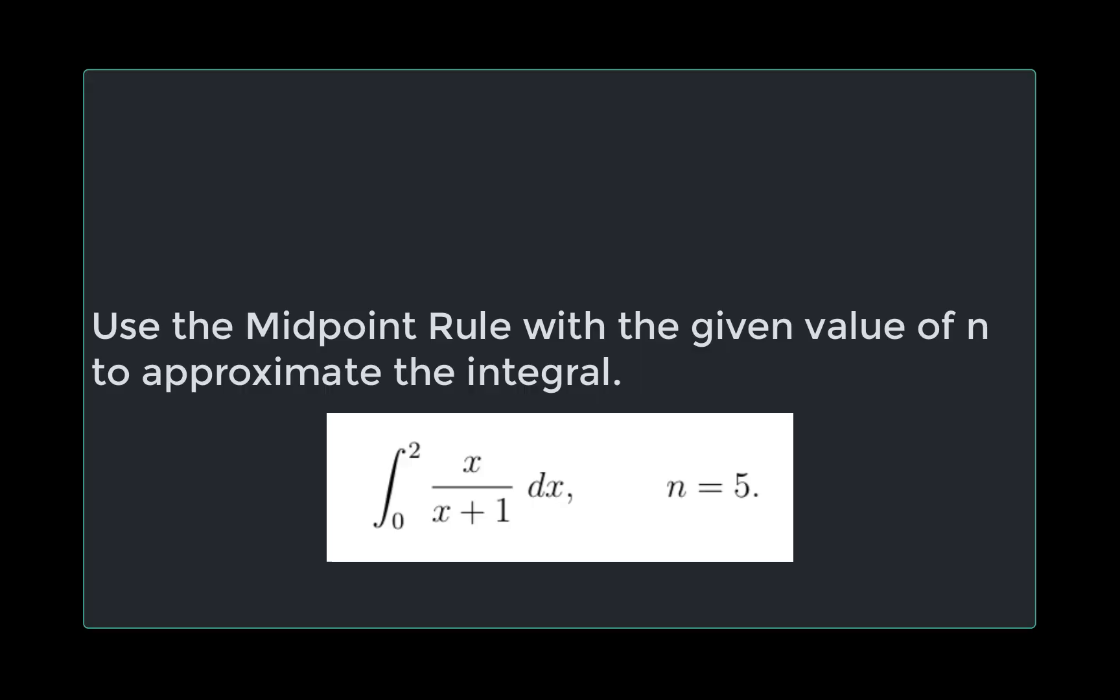The question we're working on today is: use the midpoint rule with the given value of n to approximate the integral. The integral is from zero to two of x over x plus one dx with n equals five.